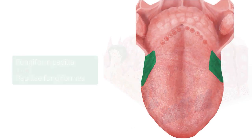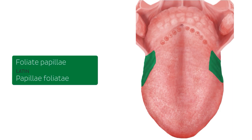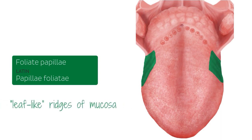The third type of papillae are the foliate papillae. The foliate papillae are vertical folds that are located bilaterally on the sides of the tongue near the sulcus terminalis. They can be described as leaf-like ridges of mucosa and they contain numerous taste buds. The foliate papillae are not very abundant in the human tongue.